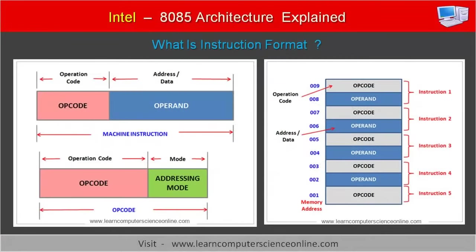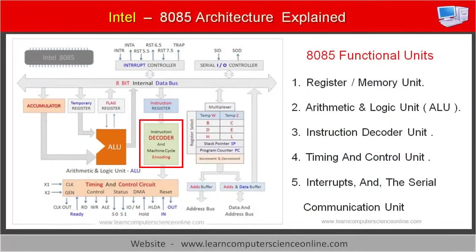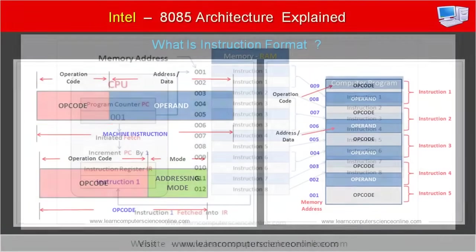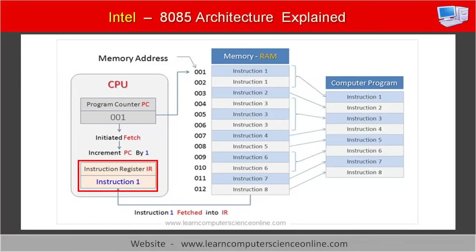Depending upon the instruction format, the control unit of the CPU decodes the instruction as specified in the OP code of the instruction format. OP code stands for operation code. It is the OP code that is decoded by the decoder and machine instruction encoder unit. The OP code part of the instruction is stored into the 8-bit instruction register during the execution of the instruction cycle.